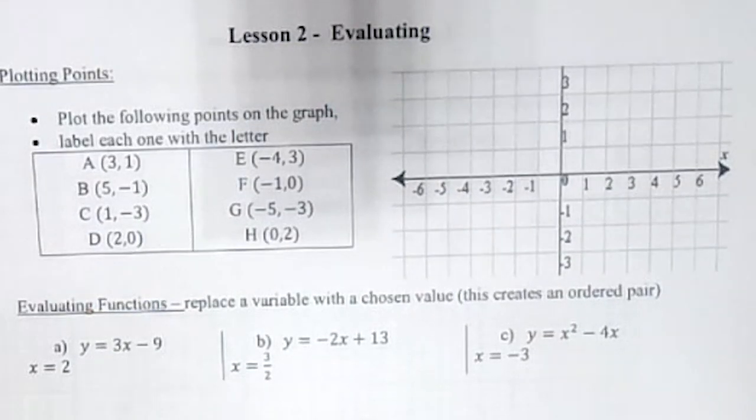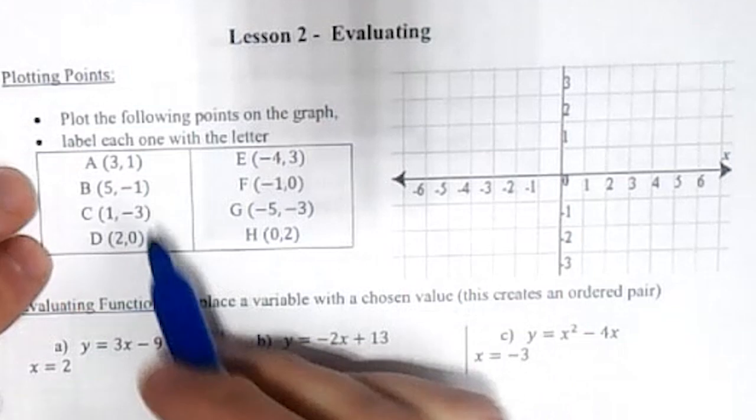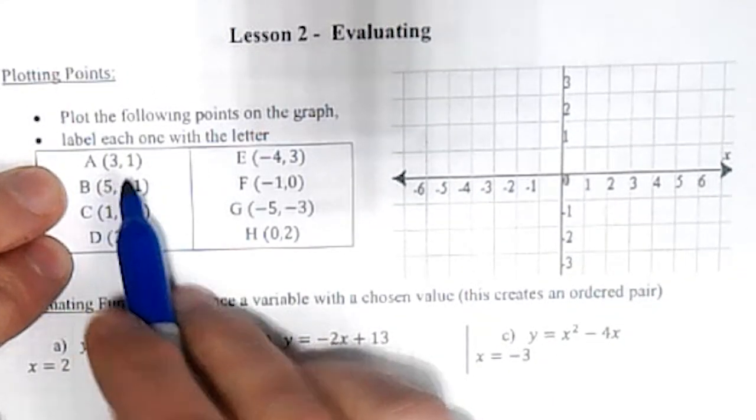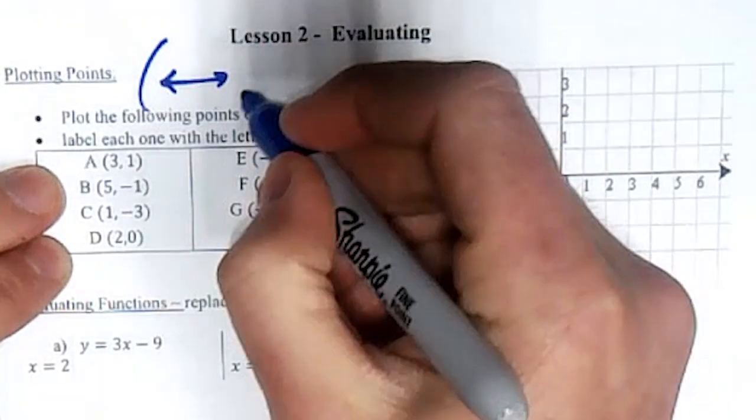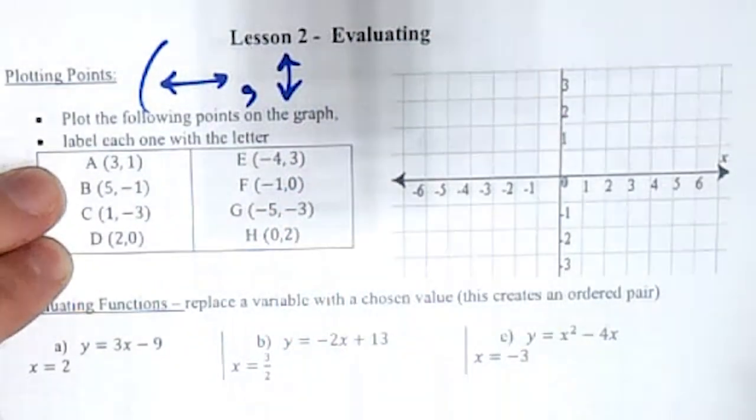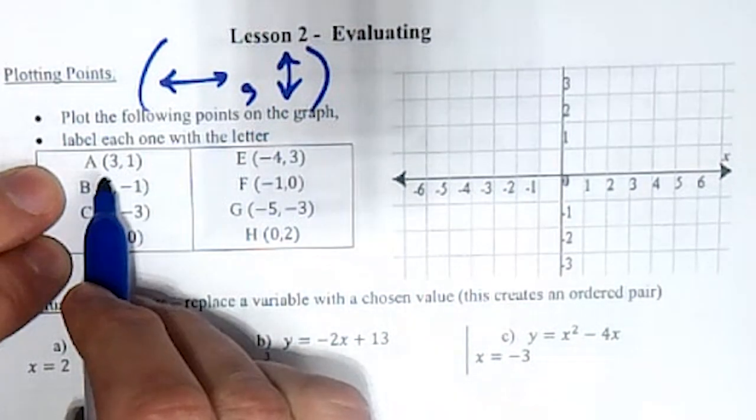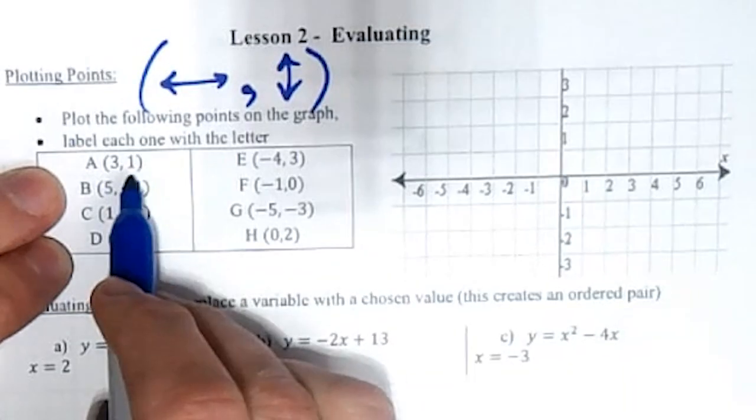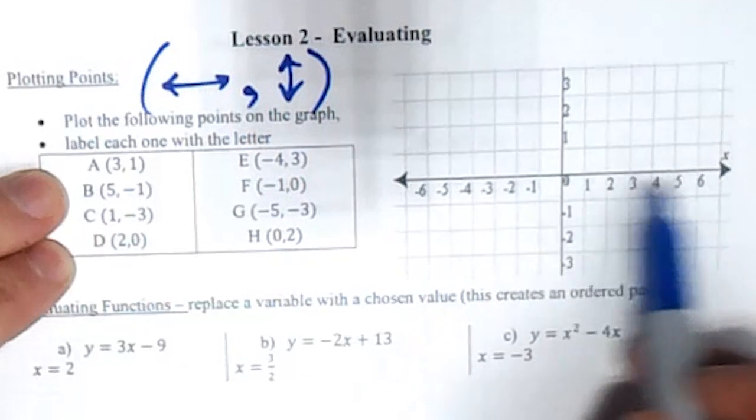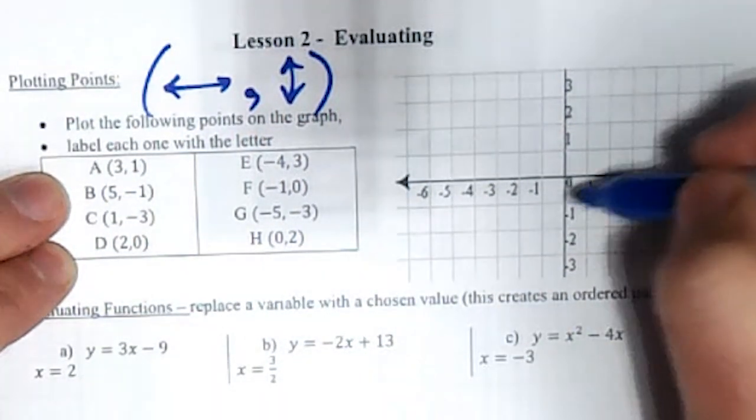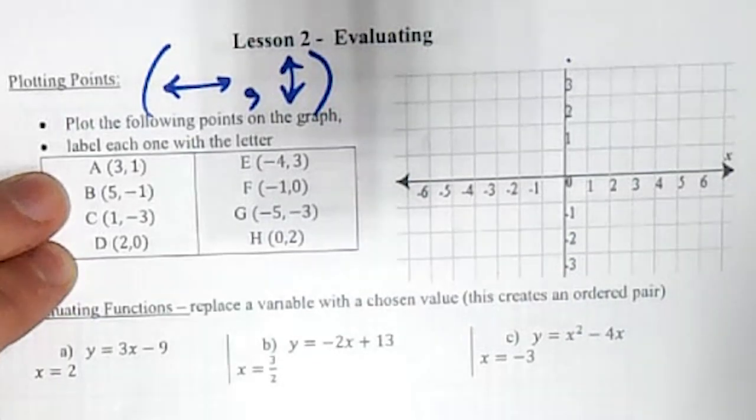For this unit we're going to do a little bit of review of graphing. Every time we're given a point, we're given two coordinates. The first one is side to side and the second one is up and down. Keep that in mind - it's always sideways first, up and down next. If we go sideways, positive is to the right, negative is to the left. Up and down - up is positive, down is negative.